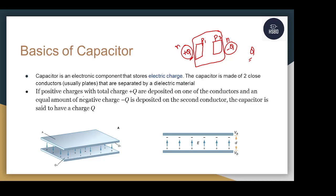As mentioned here, if positive charge plus Q is deposited on one of the conductors and an equal amount of negative charge minus Q is deposited on the second conductor, the capacitor is said to have a charge Q. As you can see in diagram A, we have explained how a parallel plate capacitor looks like. This is conductor 1 and the other one is conductor 2. Conductor 2 is charged with positive Q and conductor 1 is charged with negative Q, and the whole capacitor has a charge of Q.